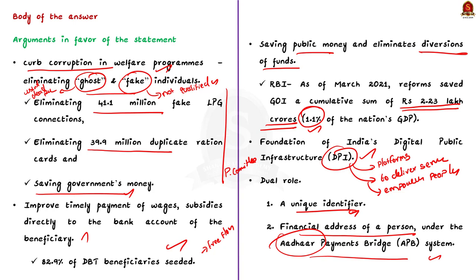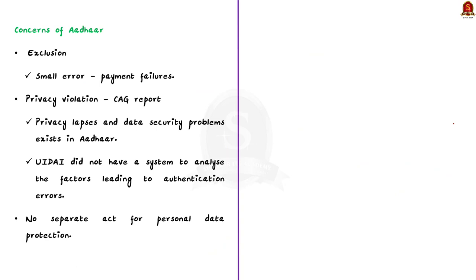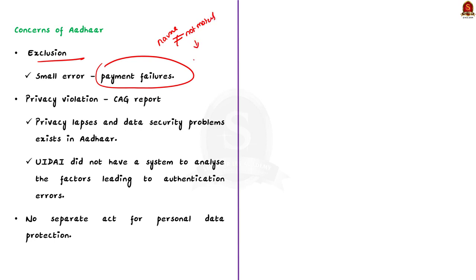You can see that we have given facts wherever possible, as this is an elucidate-type question. Now moving on to the second part of the answer. In the second part, you have to highlight the concerns surrounding the use of Aadhaar for public service delivery. Firstly, use of Aadhaar in public service delivery may lead to a lot of exclusion. In Aadhaar-based payments, any small error will result in payment failures. Even small clerical issues like differences in spelling in the job card and in the Aadhaar database can result in authentication failure and denial of service.